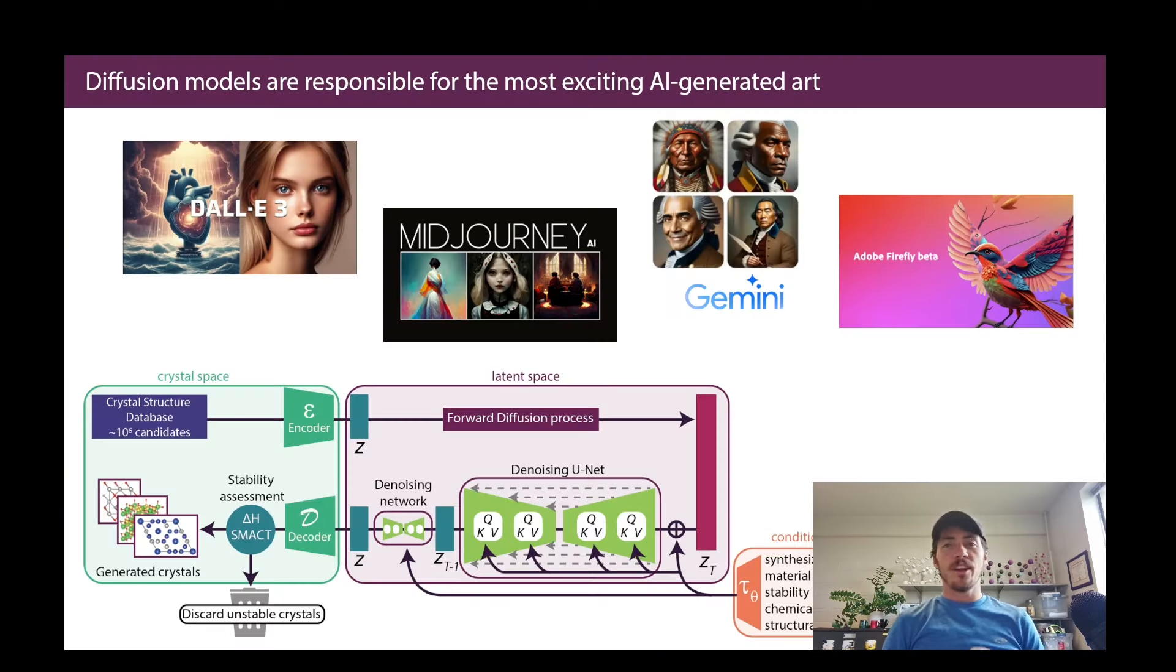Okay, so diffusion models, they are responsible for all of the stuff you see here. Things like Mid Journey, Dolly 3, Gemini, Adobe Firefly. A lot of these things are relying on diffusion models. But if you actually dive into how they actually work for material science, we're starting to use them there as well.